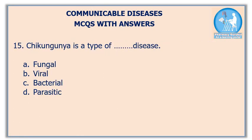Fifteenth question: Chikungunya is a type of disease — option A: fungal, option B: viral, option C: bacterial, option D: parasitic.